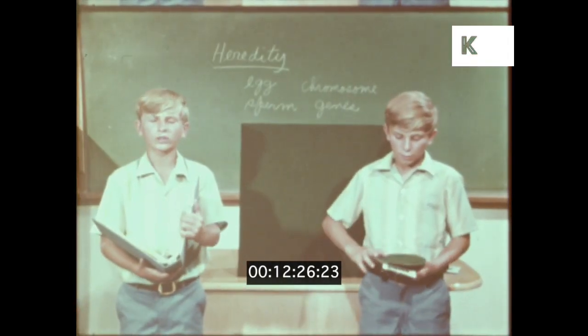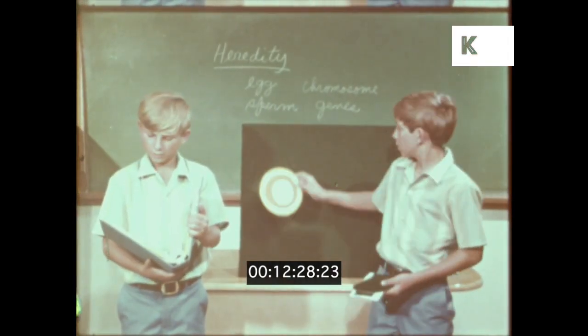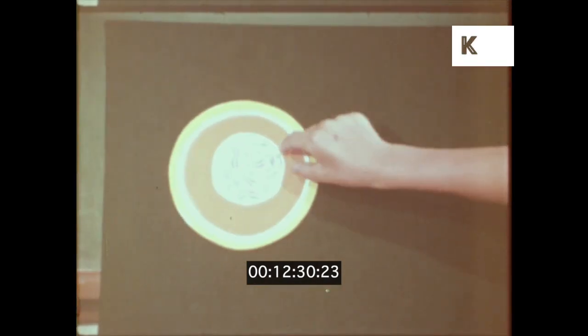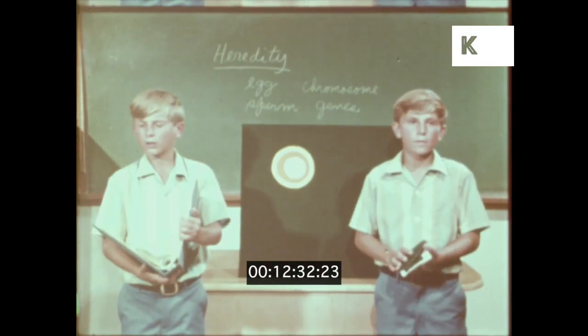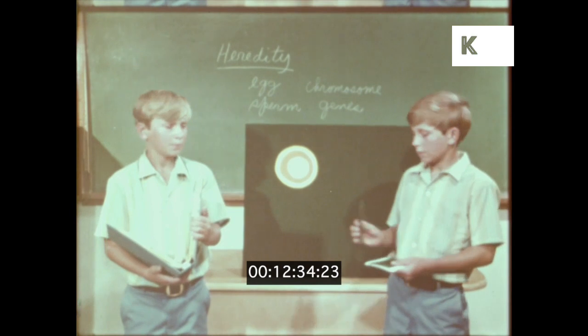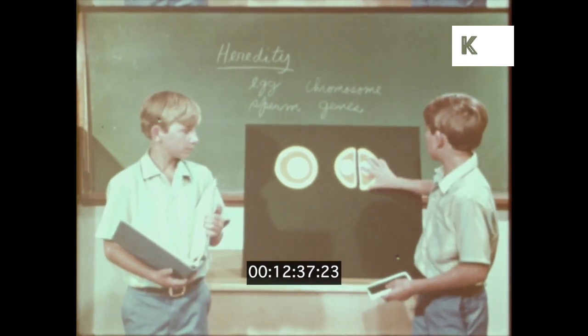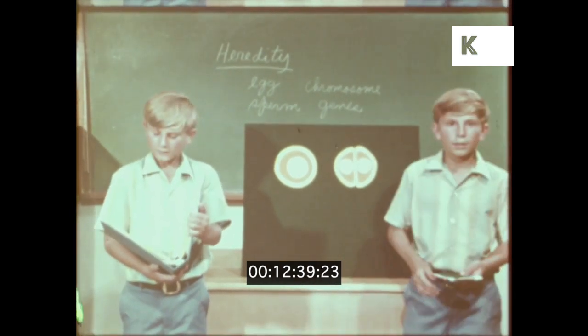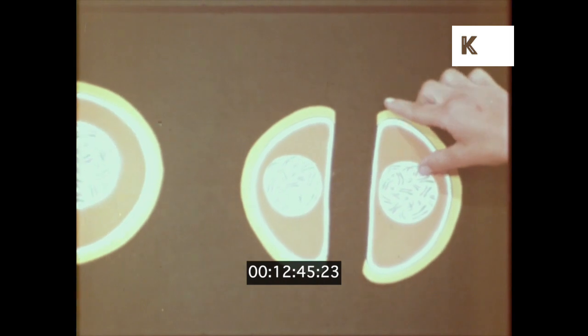Identical twins like us start from a fertilized egg. The single egg divides into two cells. But instead of staying together, the two cells split apart. Then each of these cells divides and develops into a person, just as if it were a separate egg.